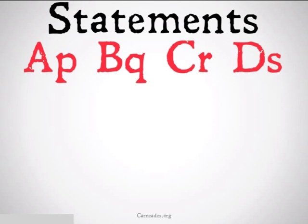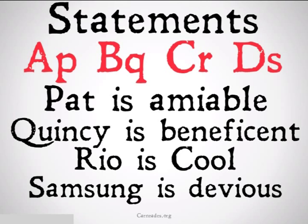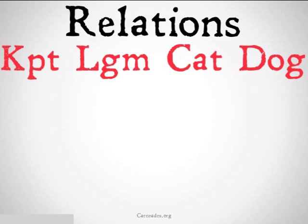We symbolize statements with a capital letter representing the predicate and a lowercase letter representing the subject — things like 'Pat is amiable,' 'Quincy is beneficent,' 'Rio is cool,' or 'Samsung is devious.' Similarly, we're going to represent relations with the relationship being represented by a capital letter — K, L, C, or D in these cases — and the subjects that are bearing the relation to each other represented by lowercase letters that follow the capital letter.